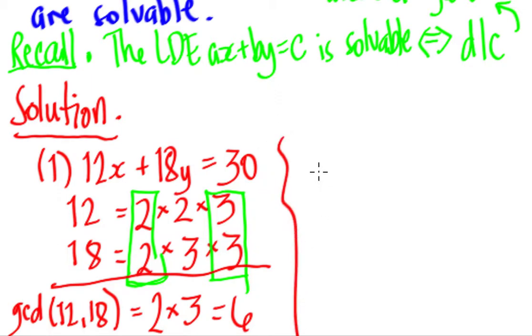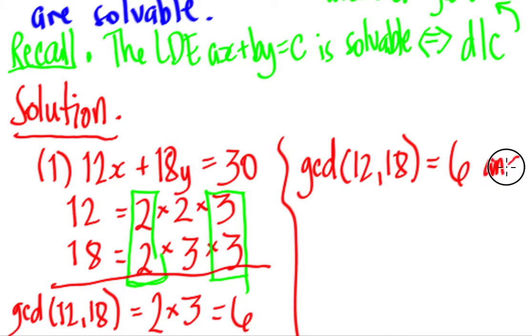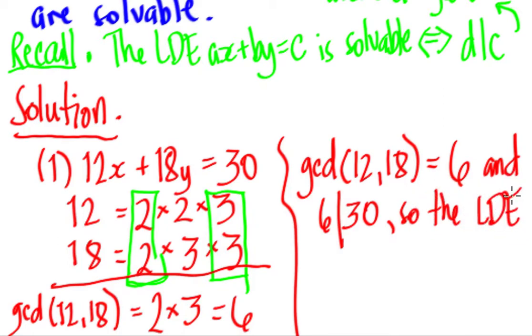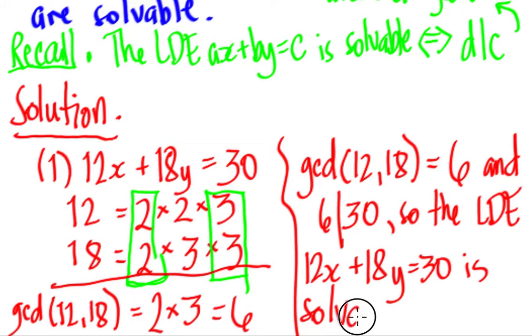The GCD of 12 and 18 is equal to 6. We can see, basing on this theorem here above, that it is solvable if d divides c. So if the GCD divides the letter c. And indeed, 6 is a factor of 30. So by the theorem in the linear diophantine equations, we can say the LDE 12x plus 18y equals 30 is solvable. What we mean when we say it is solvable is that it has a solution.